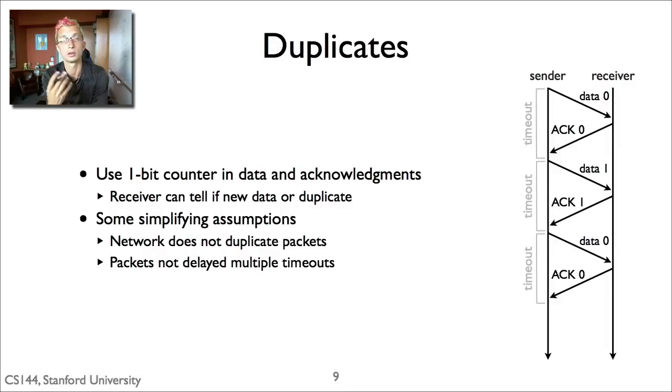Now, a single bit counter makes a couple of simplifying assumptions. This doesn't work all the time. Like, what if a packet is delayed for many round trip times? It could be, for example, that this data zero is delayed all the way here. And then the receiver ACKs it, but it turns out it's actually just a copy of old data. And so this particular one-bit counter approach makes two simplifying assumptions. First, the network isn't duplicating packets itself. Second, the packets are not being delayed for multiple timeouts. Now you can solve these problems by increasing the sequence number space. But for the simplifying assumptions of a simple protocol operating environment, this one-bit counter can help a lot.